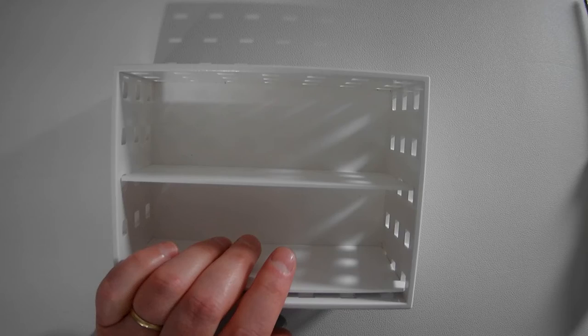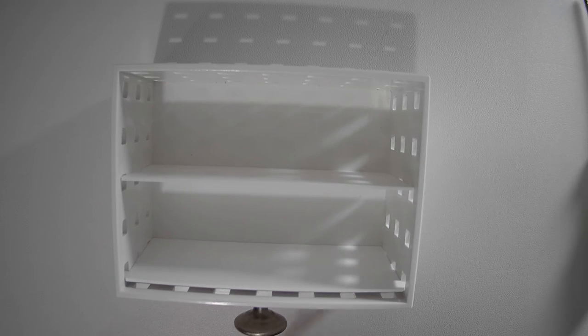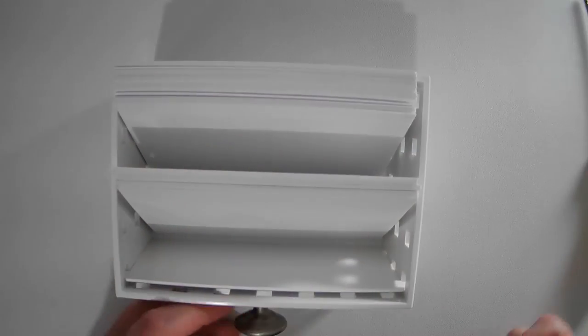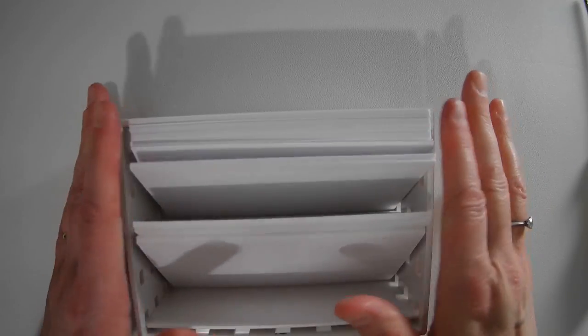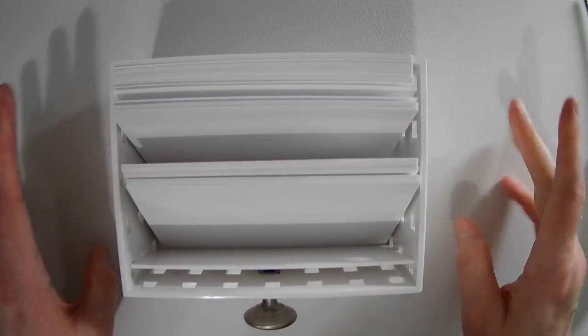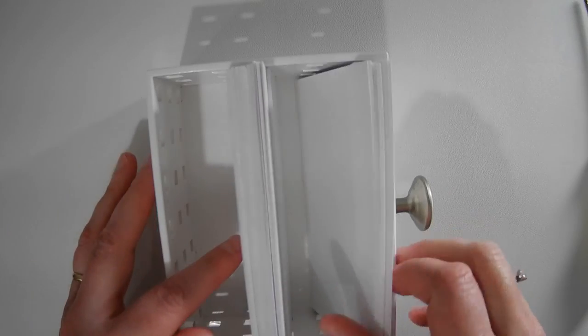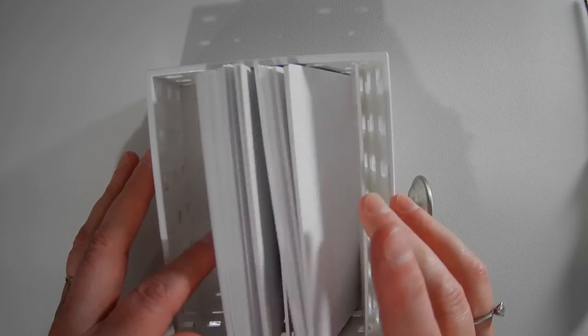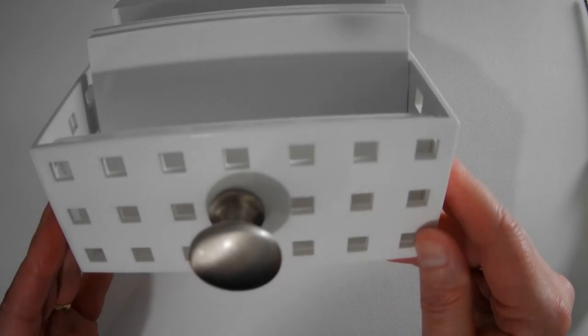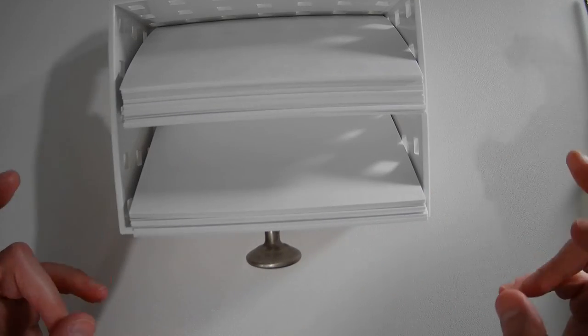But let me show you what this looks like with index cards in it. These are just blank index cards for purposes. But you can see, it is almost the exact right width for my index cards. It's phenomenal. And how much does this hold? I would say you could probably get 400 index cards in just one of these caddies. But there you have it. This is how you put together an index card caddy, or, like I said, drawer.